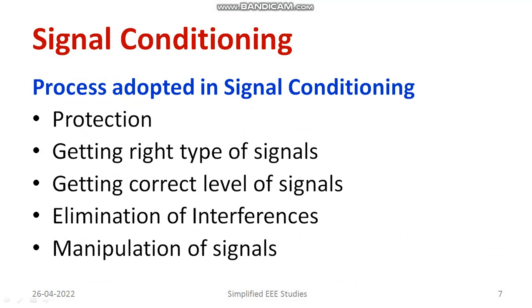There are different processes involved in signal conditioning: protection, because the output of a transducer cannot be directly given to a presentation unit as it may damage the display unit; getting the right type and correct level of signals by using the signal conditioning device; elimination of interference such as noise and EMI; and manipulation of signals in different forms — either analog or digital. These are the different types of processes involved in signal conditioning.